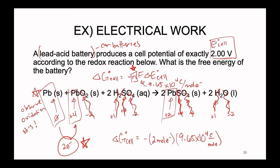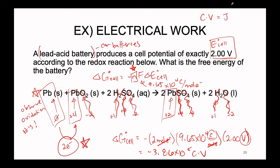We can now calculate the standard Gibbs free energy: ΔG° = −(2 mol e⁻) × (9.65 × 10⁴ C/mol e⁻) × (2.00 V). This gives us a value of −3.86 × 10⁵. Looking at units: moles of electrons cancel, and we are left with coulombs times volts. By definition, a coulomb times a volt equals a joule — so the result is −3.86 × 10⁵ joules.